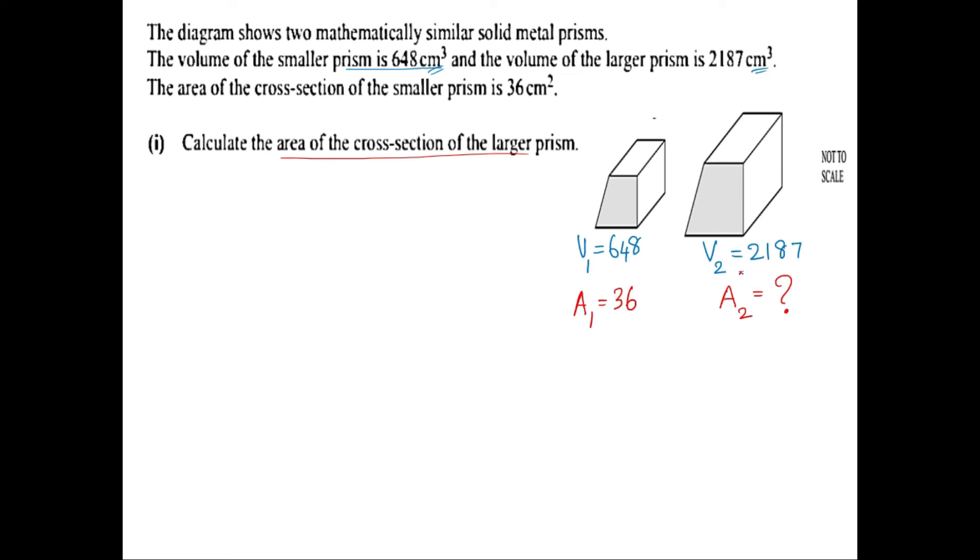From the given data, let's find k, the scale factor. I have the volume for both similar shapes, so I'll use that data to find k. Since V2 over V1 involves volume, it equals k cubed. So k³ equals 2187 over 648. Taking the cube root of 2187 over 648, k equals 1.5.